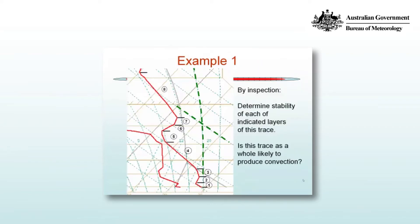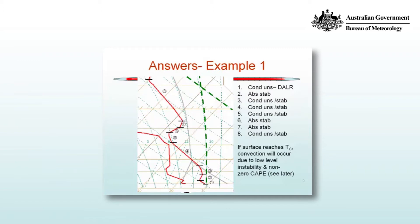Here's the first example. By inspection, determine the instability of each of the labelled layers of the trace, then assess whether or not this trace is likely to produce convection. The lowest layer follows a dry adiabat, so it's conditional on whether or not the parcel is saturated — it's conditionally unstable. The second layer is absolutely stable, regardless of whether the parcel is saturated or unsaturated.